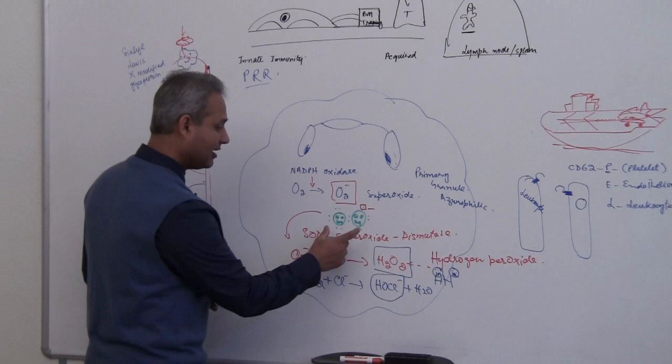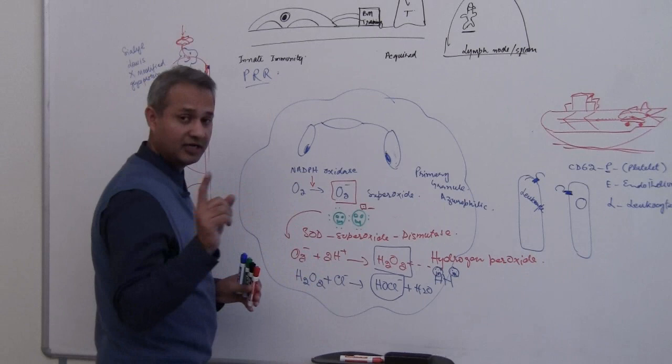So now we have three types of monsters inside the neutrophil. We have this oxygen superoxide twin monster, they are really dangerous.